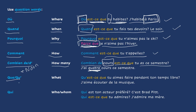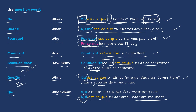You can use que or qu' in front of a vowel, which means what. For example, Qu'est-ce que tu aimes faire pendant ton temps libre? What do you like to do during your free time? J'aime écouter de la musique. I like to listen to music. Or qui, which means who or whom. Qui est-ce que tu admires? J'admire ma mère. Whom do you admire? I admire my mother.